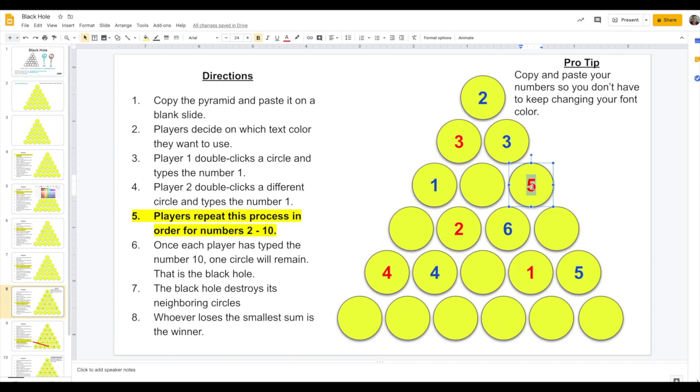Just take the number that you've already added, copy it, and then double-click the new circle, paste it, hit Backspace, and then make the next number that you're going to add. And that way, it makes it a lot faster for you.